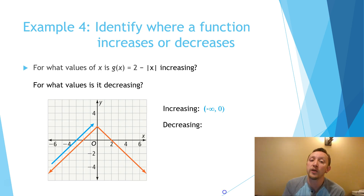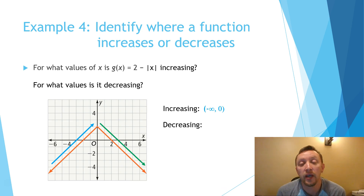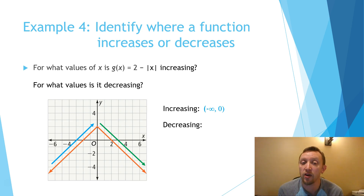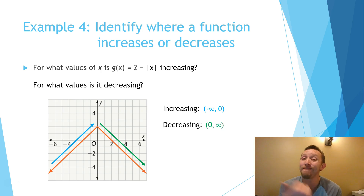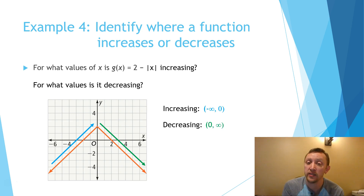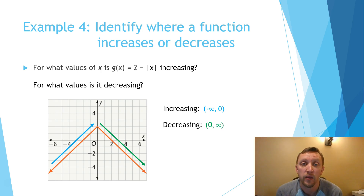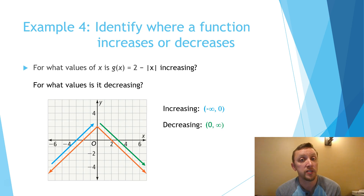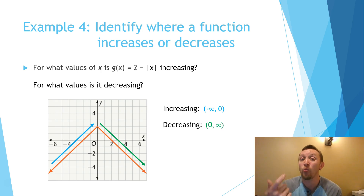Where is it decreasing? Reading it from left to right, it's decreasing starting where x is 0 on to infinity. So from 0 to infinity, the y values are decreasing as x goes from 0 to infinity. We're referencing this in terms of x where the y value is increasing, and in terms of x where the y value is decreasing.